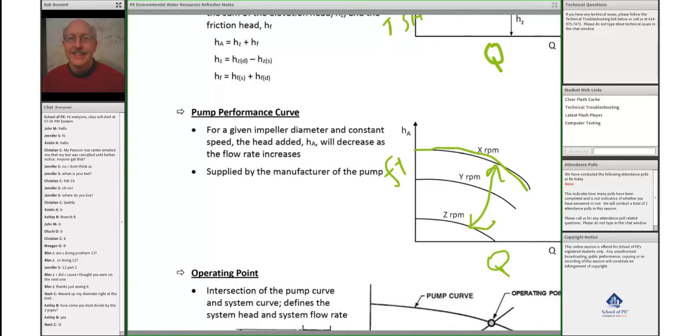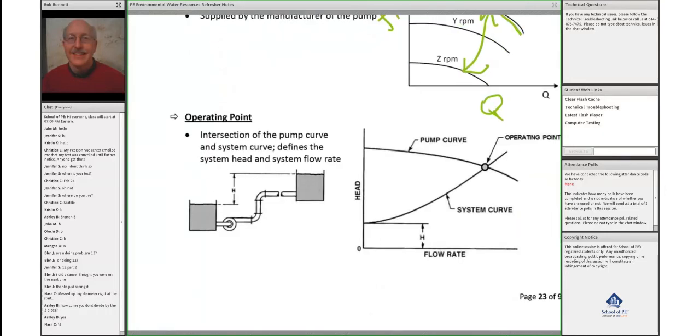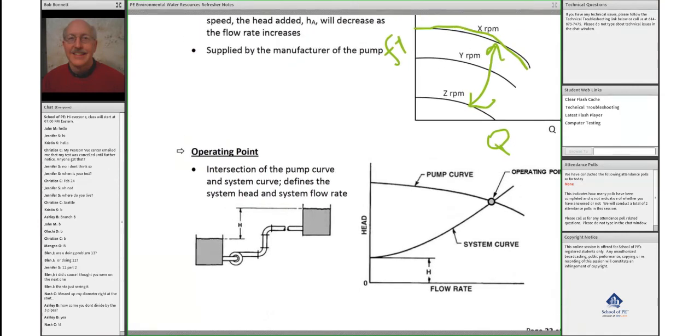Where this is going, as you know, is what's called the operating point. It is the intersection of that system curve, which is developed from the system that you're evaluating—head loss due to friction in the piping.